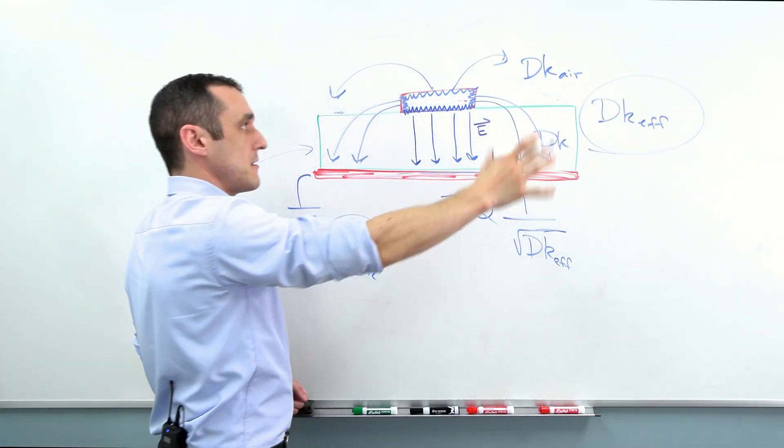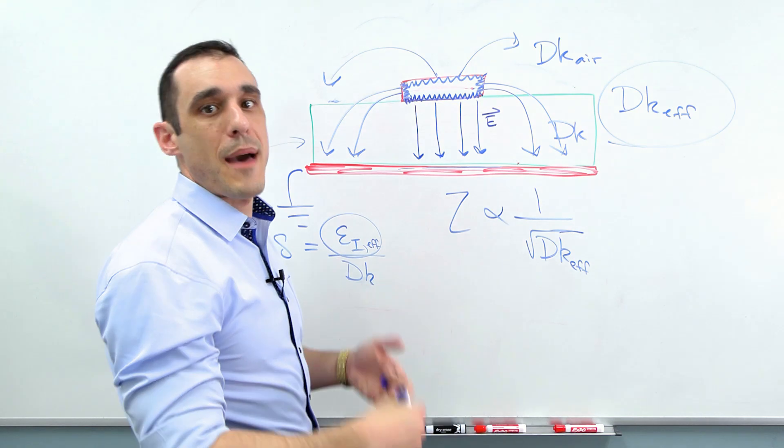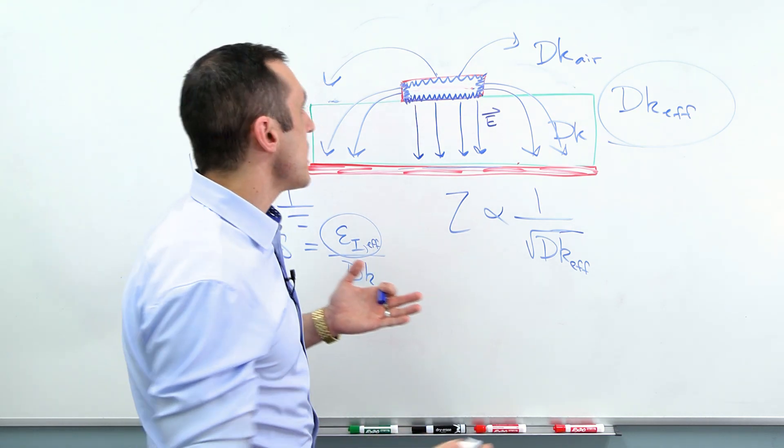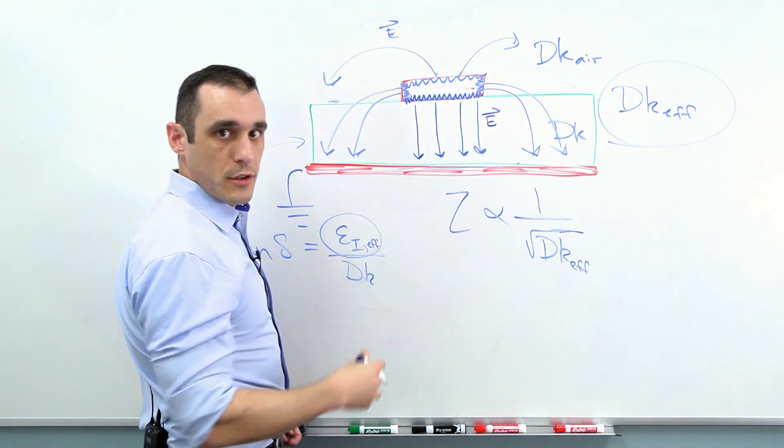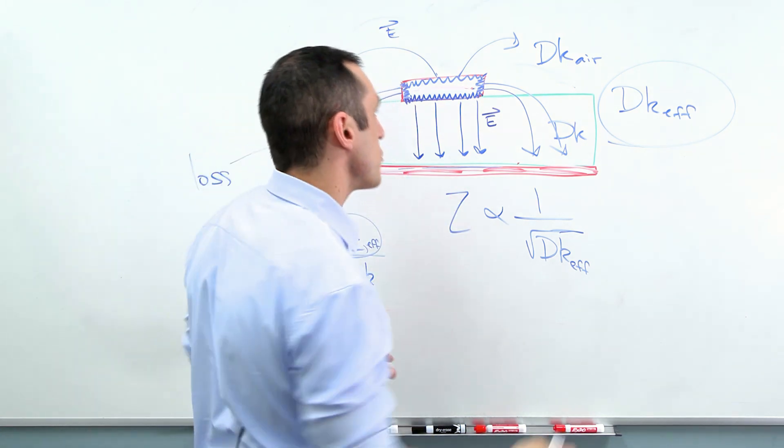Well the electric field from this line can then induce noise on the line over here. Let's say it's in this region. And that is crosstalk. So you can have capacitive coupling or inductive coupling. Here we're talking about the electric field. So the electric field will produce capacitive coupling between those two lines.